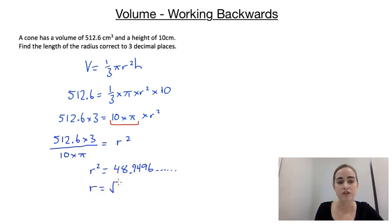And then we're going to take the square root of it. So we'd have r is equal to the square root of 48.9496 and so on. And if we round that off to three decimal places, that's going to give us 6.996 centimeters. And that's to 3dp.